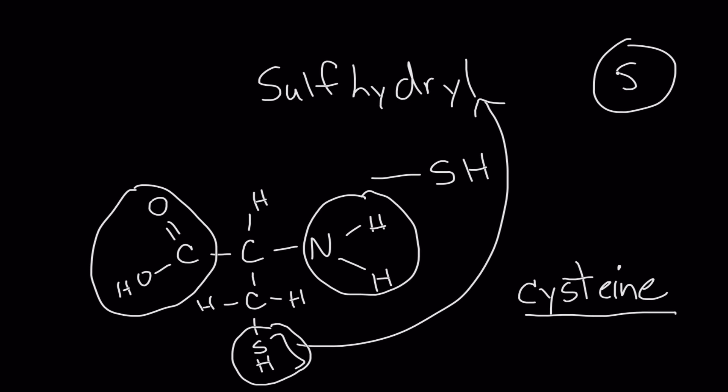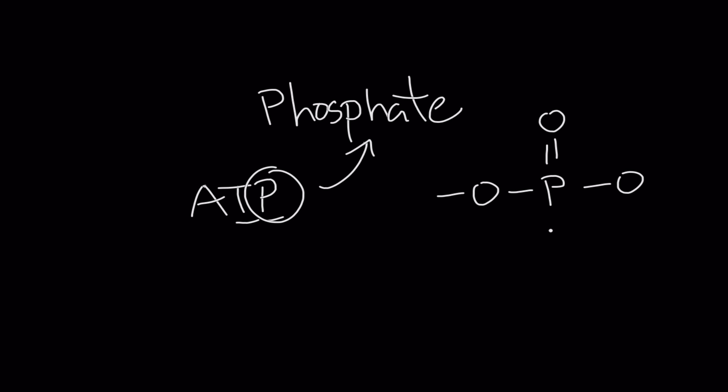Our next functional group is the phosphate group and you've heard about this before, you may not remember but phosphate groups are, remember ATP triphosphate? Well the P in ATP refers to the phosphate group. Phosphate groups look like this: they're an oxygen hooked to a phosphorus double bonded to an oxygen, oxygen, oxygen. And this oxygen down here has, these two here have open bonds so they're negative.